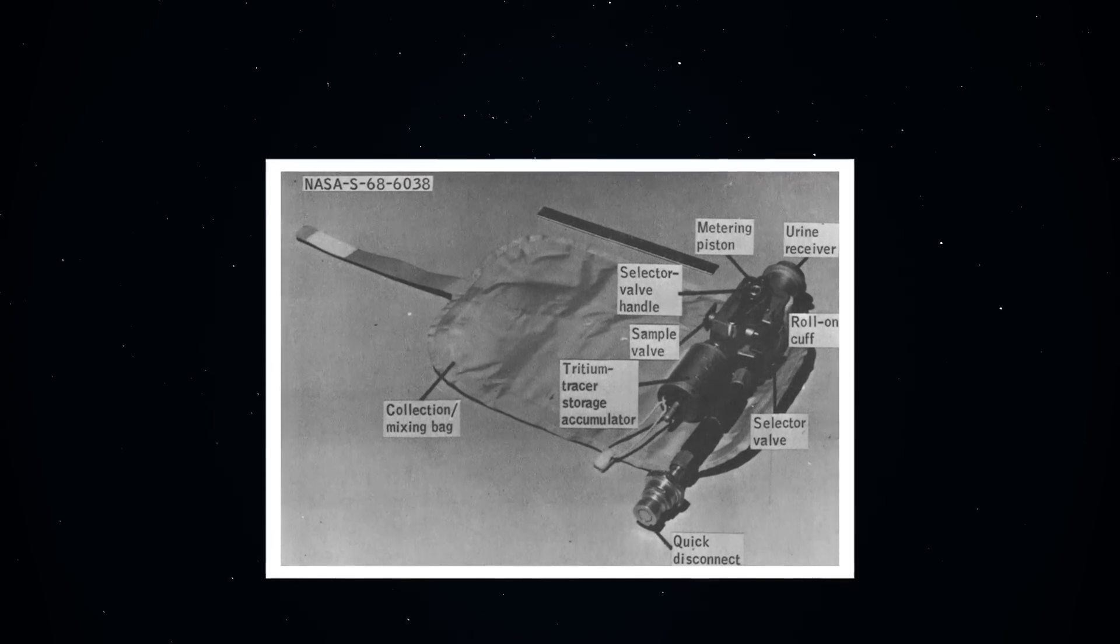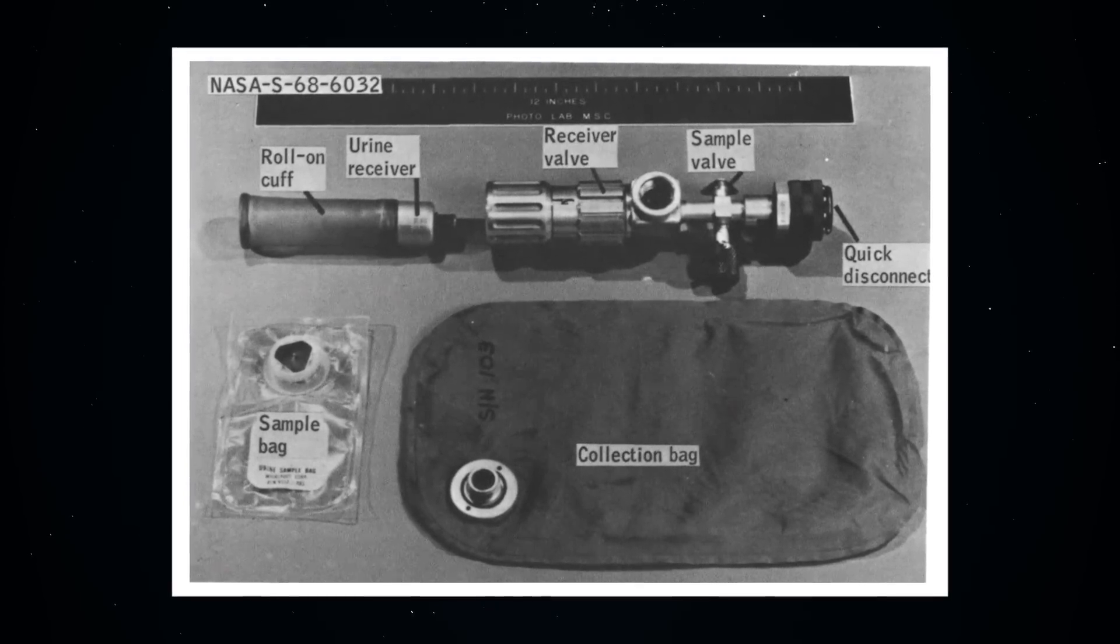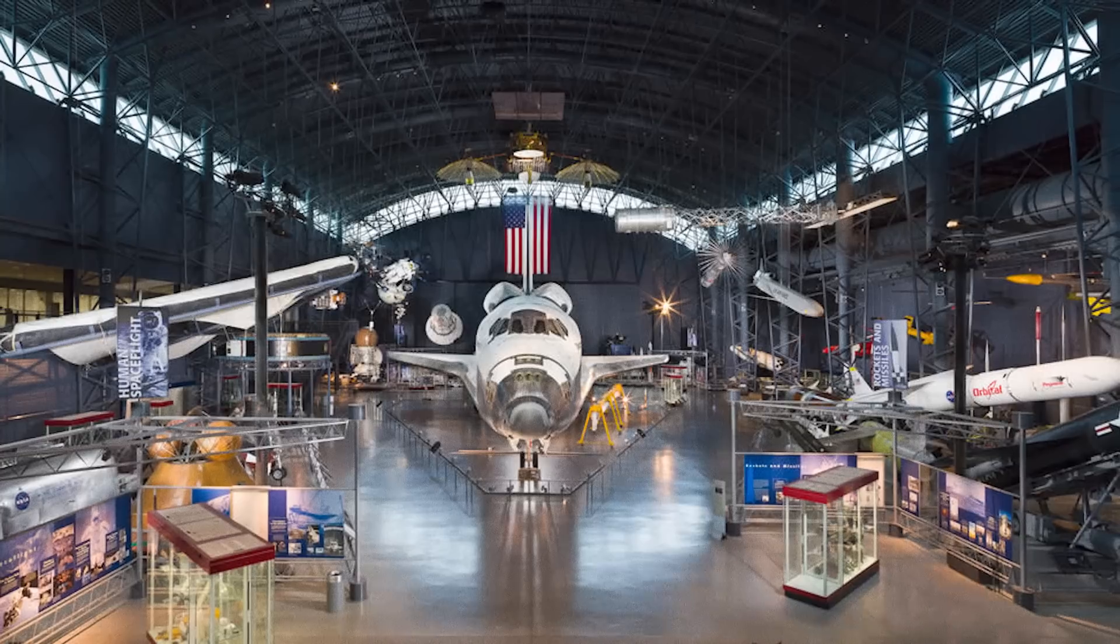You can see this for yourself if you're into that kind of thing. The actual urine containment system worn by John Glenn is on display at the National Air and Space Museum.